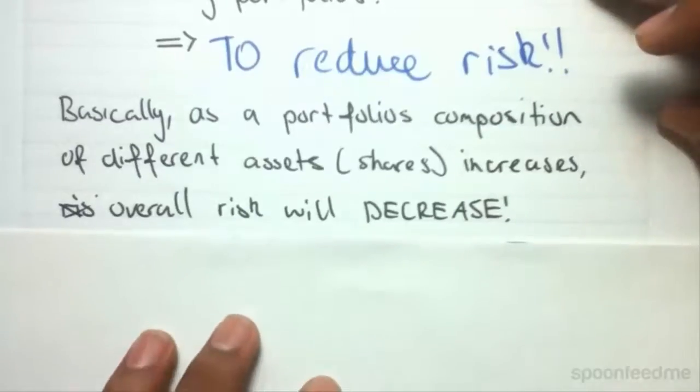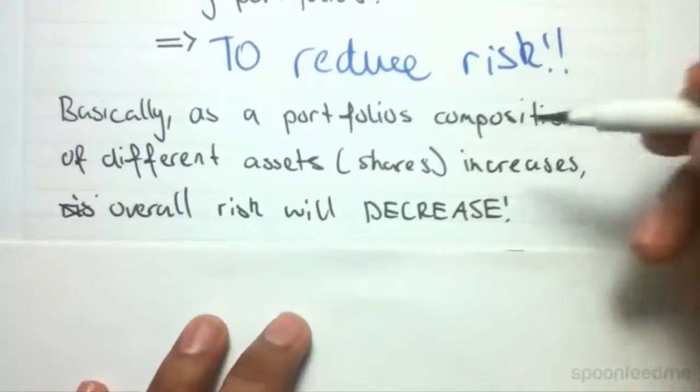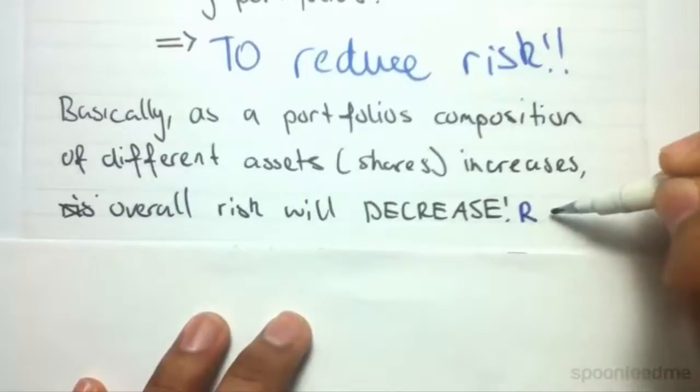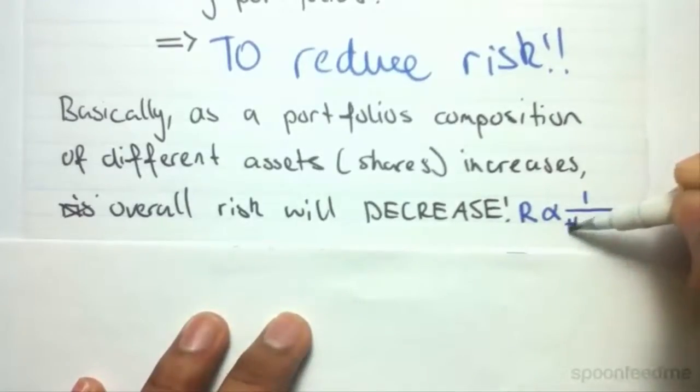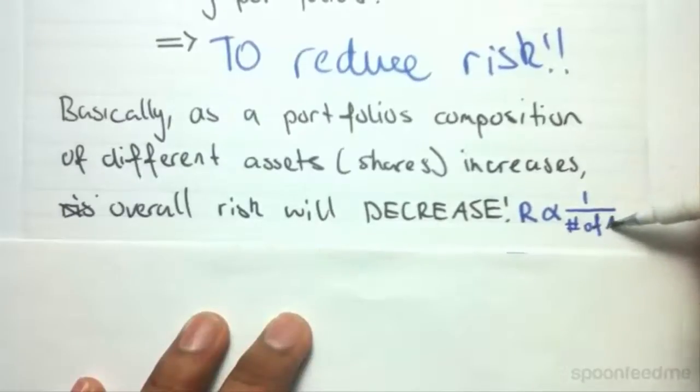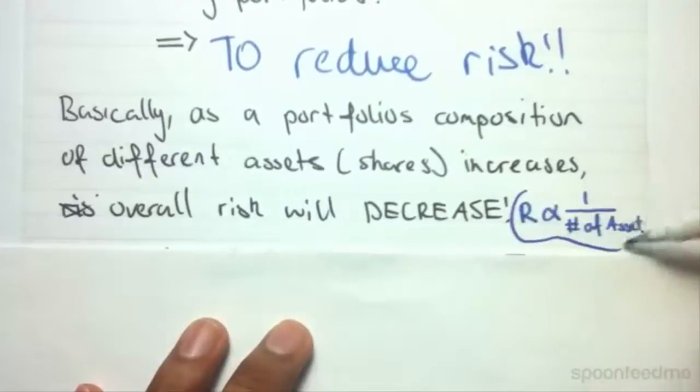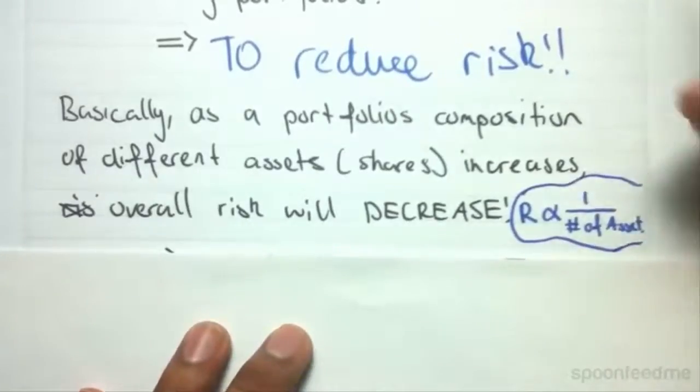So we can say that risk is inversely proportional to the number of assets. That's a mathematical explanation here.